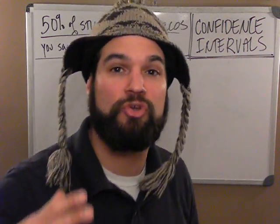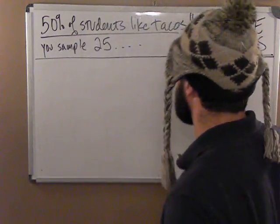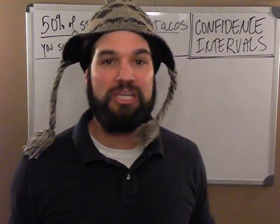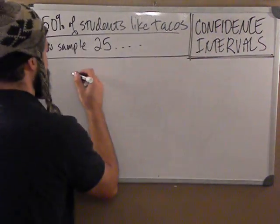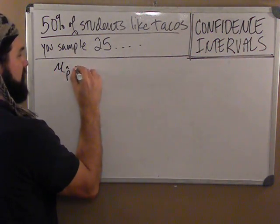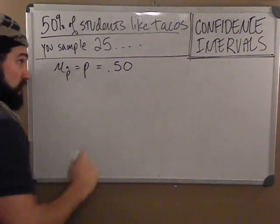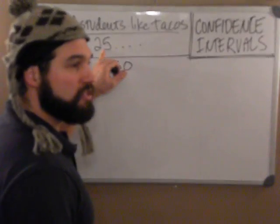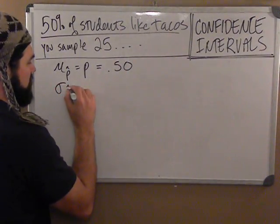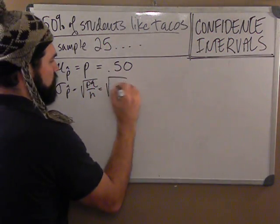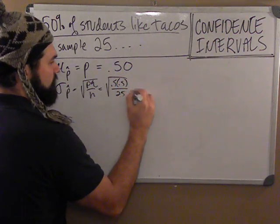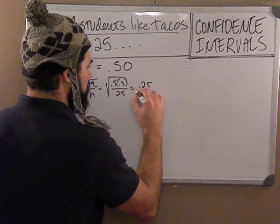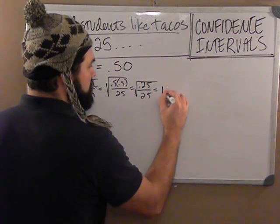Let's make a sampling distribution and I'll explain what a confidence interval is. Suppose 50% of the students like tacos. You sampled 25 students. The mean of the sampling distribution of P-hats is going to be P, which in this case is 0.50. The standard deviation is the square root of P×Q over N — the square root of 0.5 times 0.5 over 25 — which equals the square root of 0.01, or 0.10.